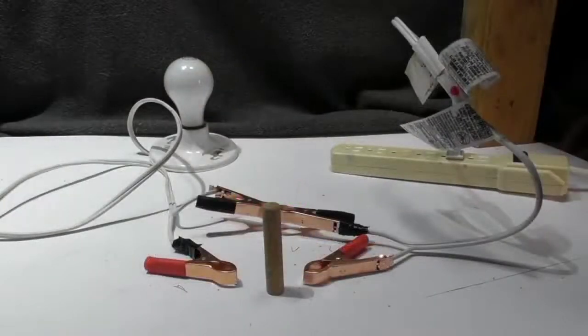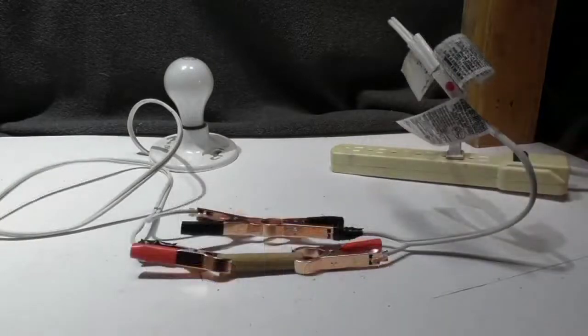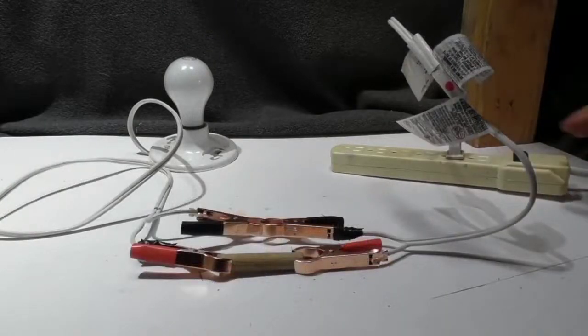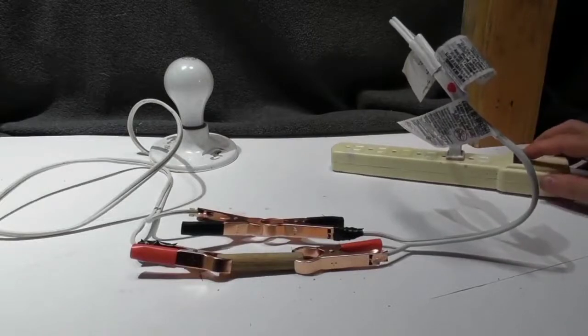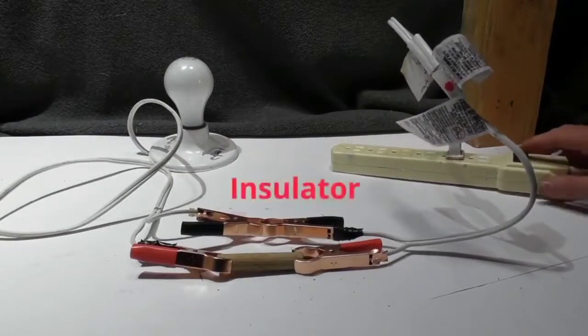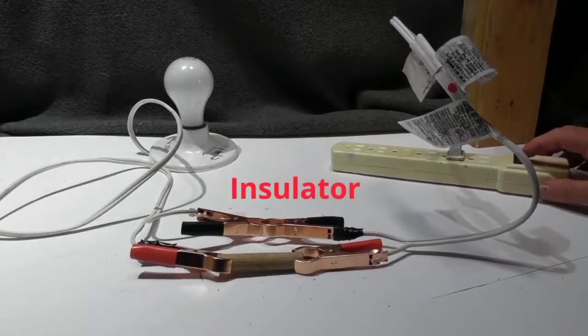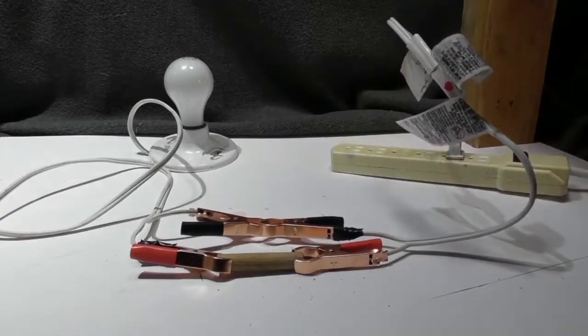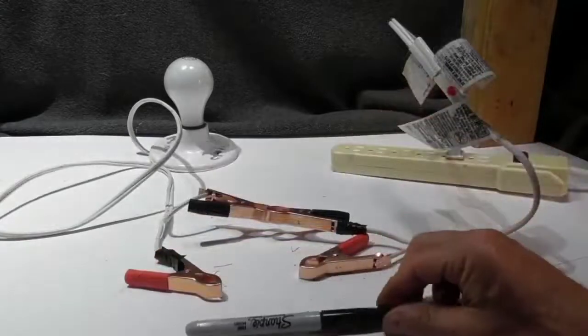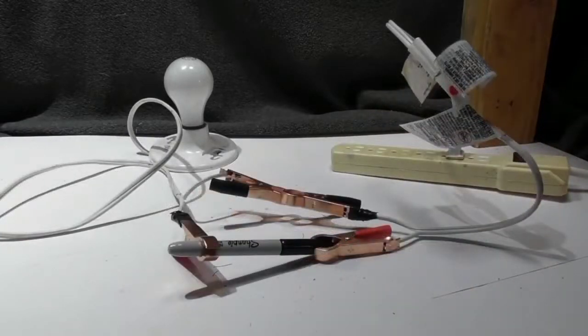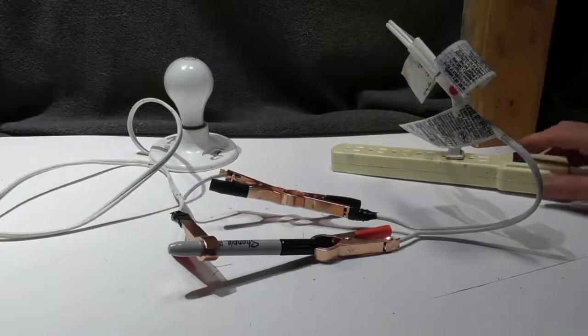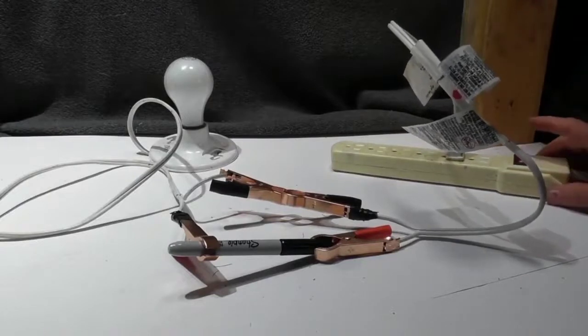Now how about some wood. Hook it up. Flip the switch. Nothing happens. So it is an insulator. After the block of wood, let's try this. How about we try a sharpie. It is plastic. It is hooked up. We go to the switch. And nothing happens. So it is an insulator.